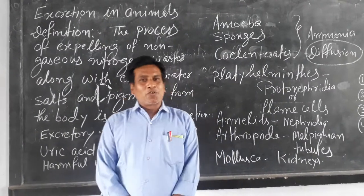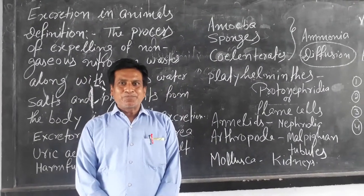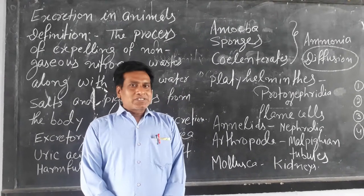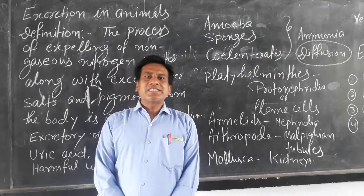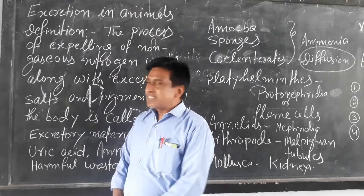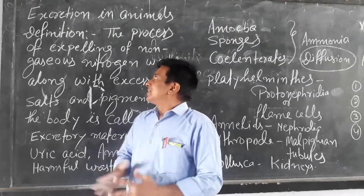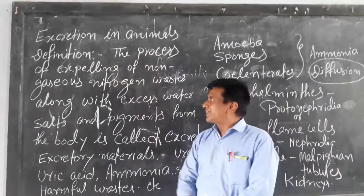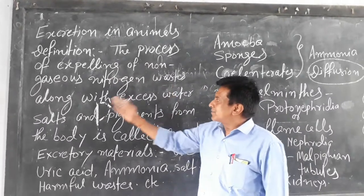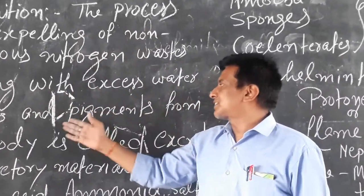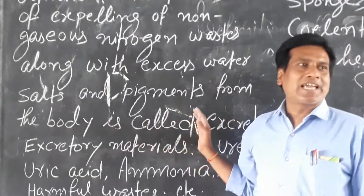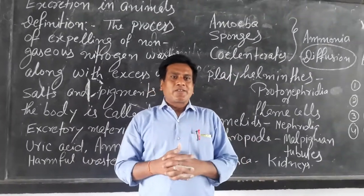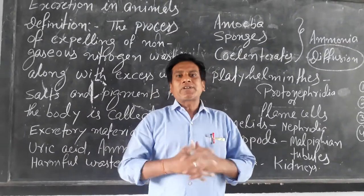I am going to discuss one other topic for class 10. My topic is excretion in animals. First of all, I would like to discuss what is excretion. Excretion is a process. The process of elimination of nitrogenous waste along with the excess water, salt and pigments from the body is called excretion.